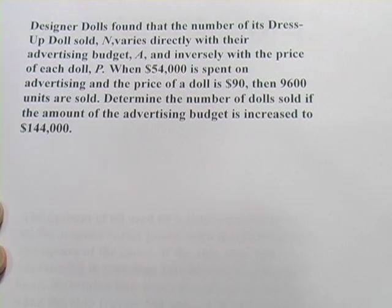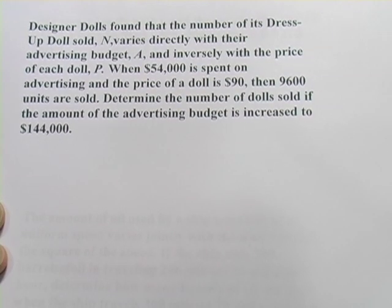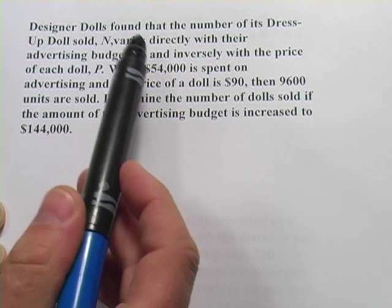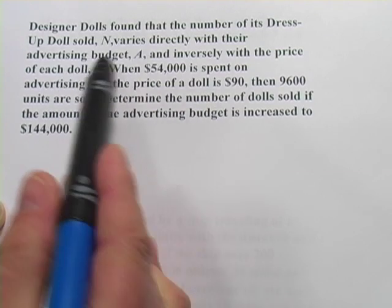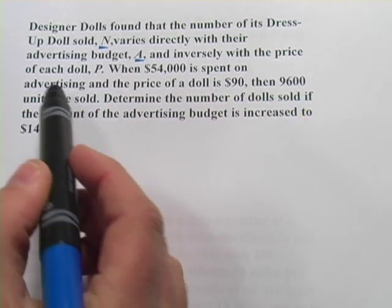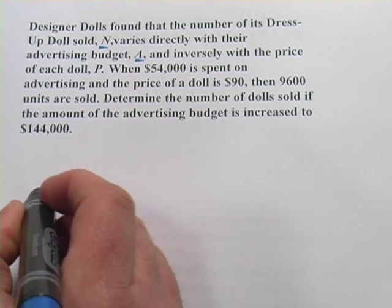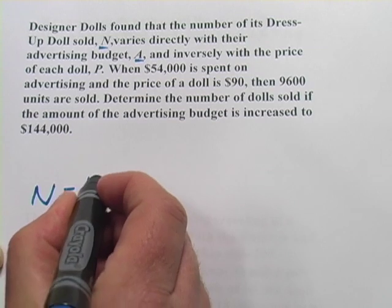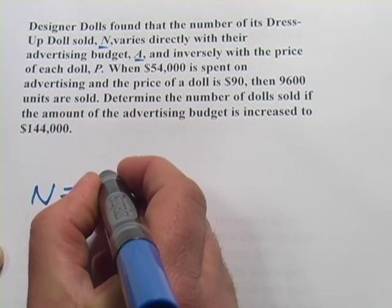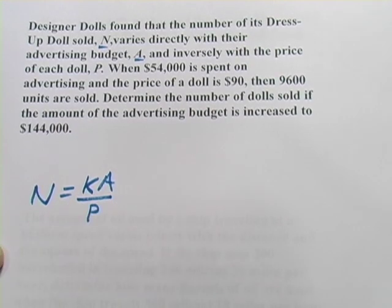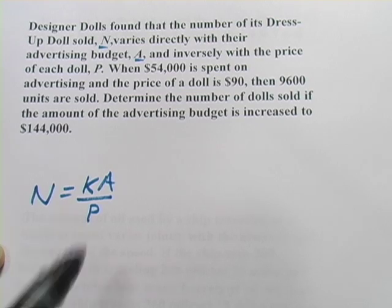One of the neat things about these variation problems is that some of them can be models for real things in the real world that people actually use. So, for example, something like this one. It says, Designer Dolls found that the number of its dress-up doll sold, N, varies directly with their advertising budget, A, and inversely with the price of each doll. So we put the P on the bottom of the fraction. So this is a combined variation. It has both direct and inverse variation in it.